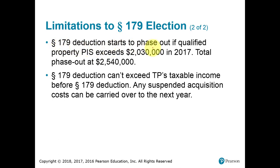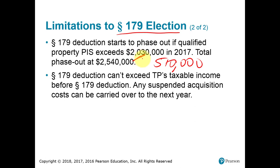If you buy a large amount of depreciable tangible personal property, you may not be able to use the Section 179 election — especially for very large companies. The phase-out range shows that if you place more than $2,540,000 of assets in service during the year, you cannot elect to deduct anything under Section 179. If you have less than $2,030,000 of tangible personal property placed in service, up to $510,000 can be fully deductible. The deduction is reduced dollar-for-dollar above the initial limit. For most small businesses, they never come close to these dollar amounts.